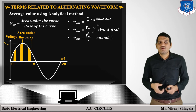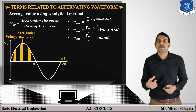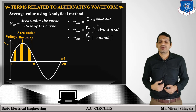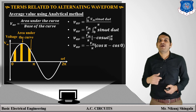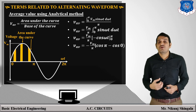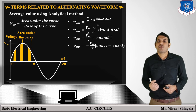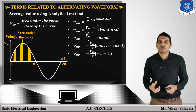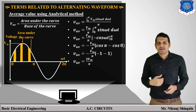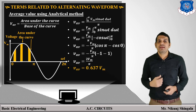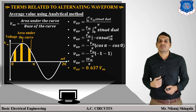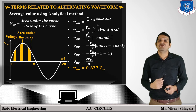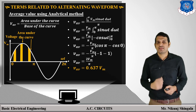Integrating sin(ωt) with respect to ωt gives −cos(ωt). So V_avg = (Vm/π) × [−cos(ωt)] from 0 to π = (Vm/π) × [−cos π − (−cos 0)] = (Vm/π) × [−(−1) − (−1)... ] giving V_avg = 2Vm/π. Calculating 2/π gives 0.637, so V_avg = 0.637 × Vm, where Vm is the maximum amplitude of the given signal.